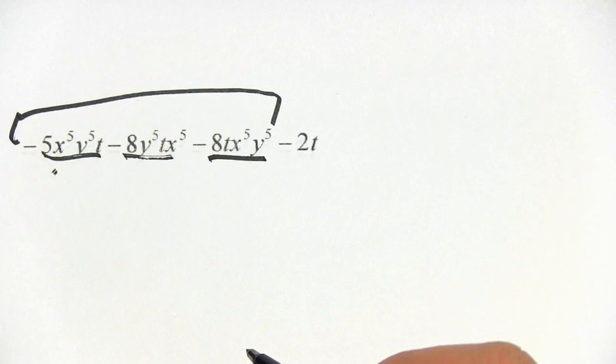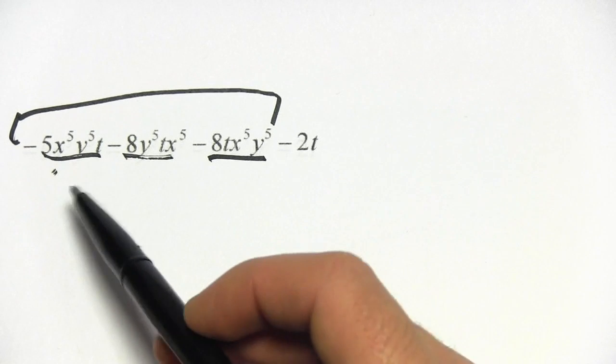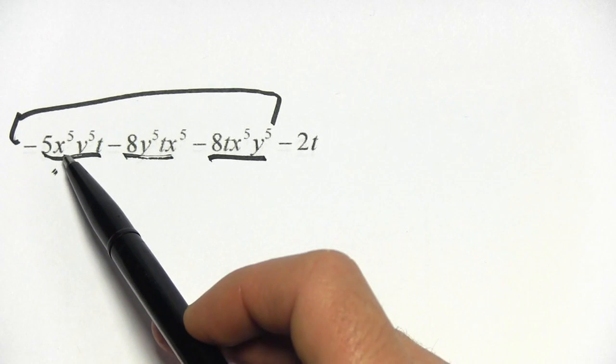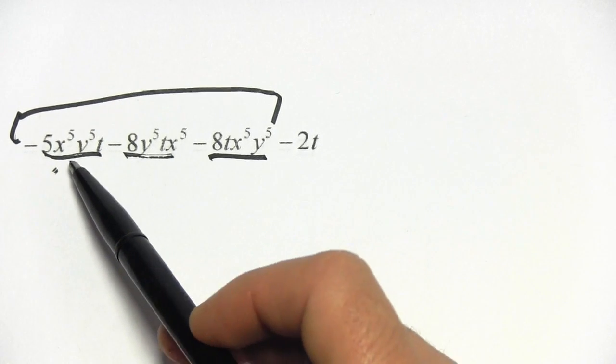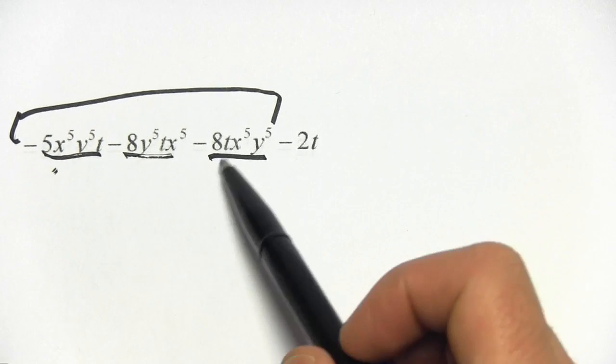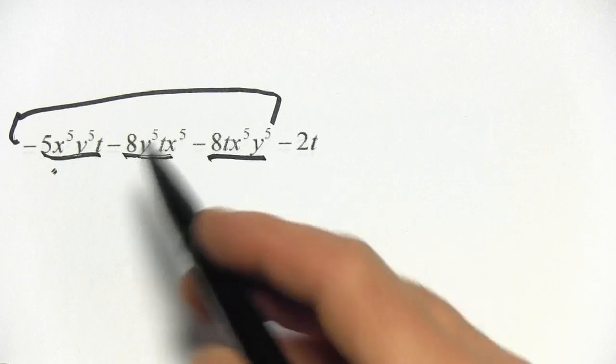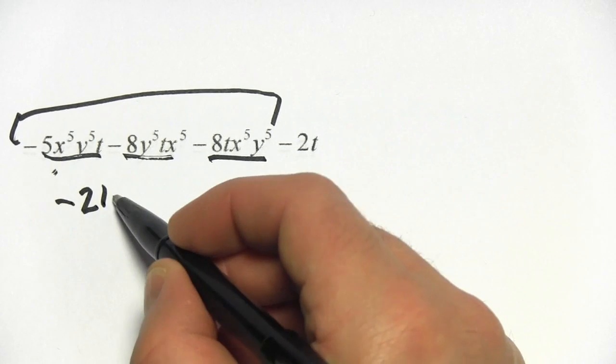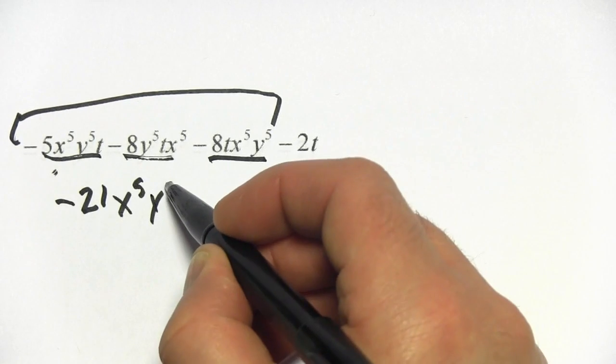When I write them, I'll put them in alphabetical order. So I'll probably use with the highest power of x first. So I'll probably use this format of it. But I've got a negative 5, a negative 8, a negative 8. I think that adds up to negative 21. x to the 5th, y to the 5th, t.